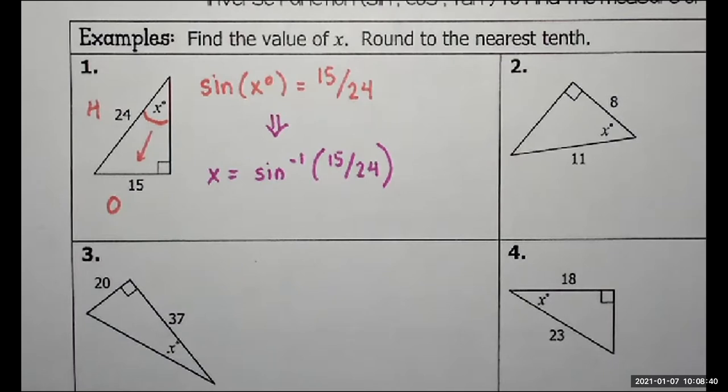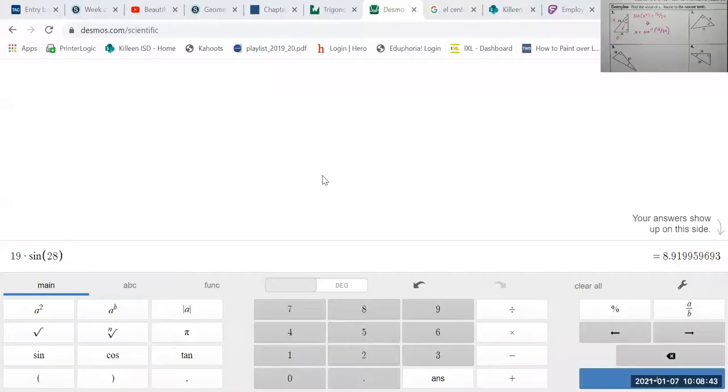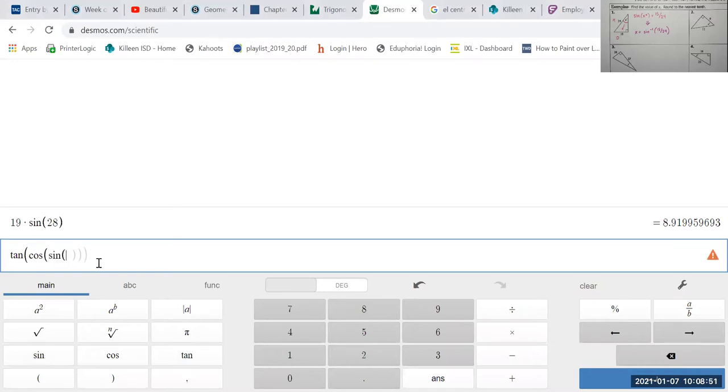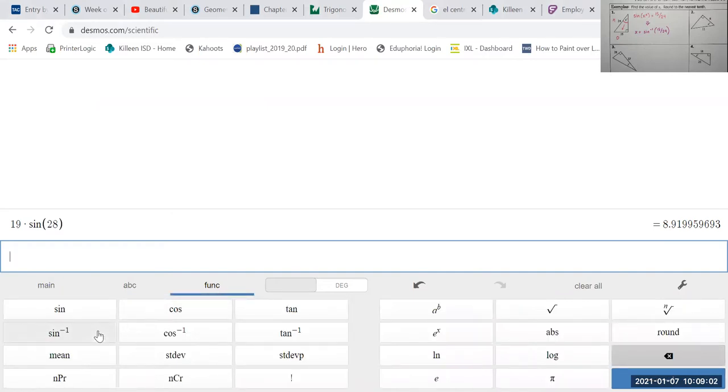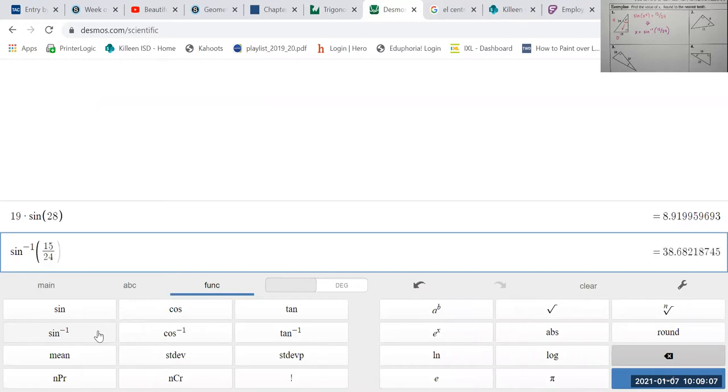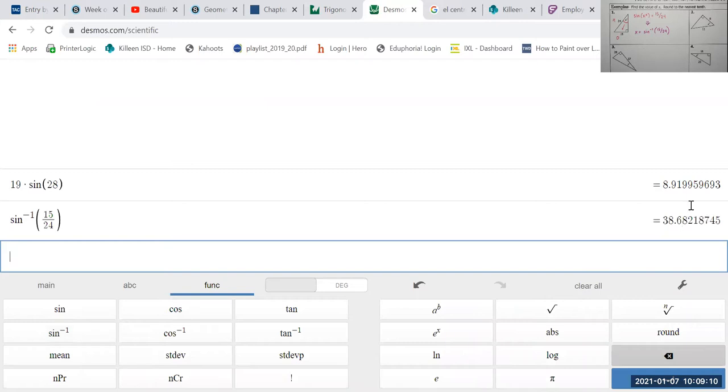So typically on the standard Desmos graphing or scientific calculator, there isn't an inverse for the sine, cosine, and tangent on the main screen. So let me share my screen for a moment. Now if you're doing this at home, this is why I'm showing it. Alright, so here is the main screen. We have sine, cosine, and tangent. However, there's nothing with the sine inverse right here. So instead we have to go to the function tab, and then I can put sine inverse into there. Then I just put in my ratio, 15 over 24, and I have my angle measure. 38.68 rounds up to 38.7.